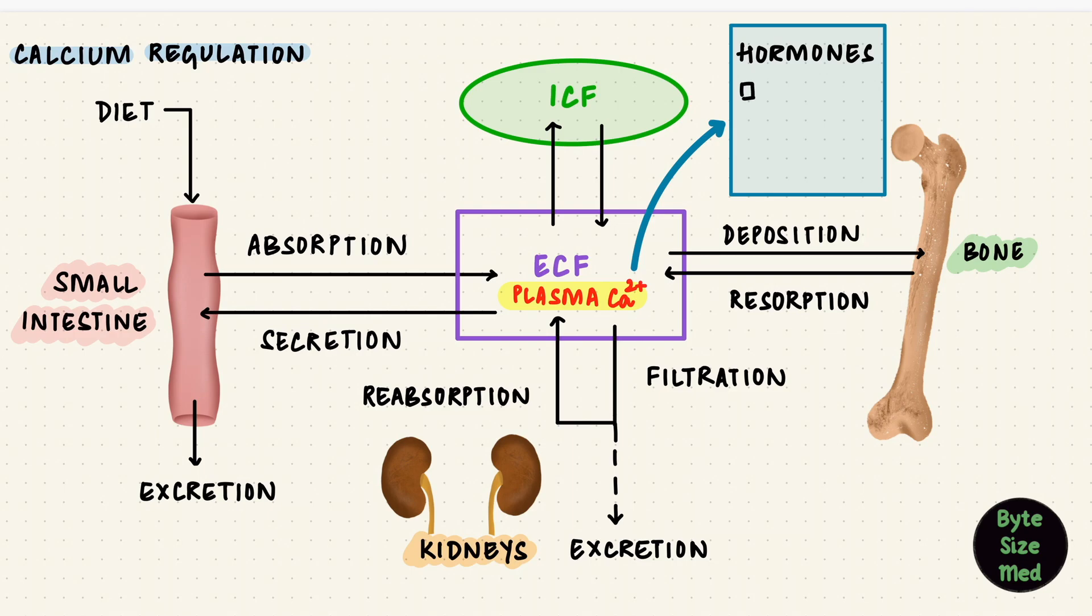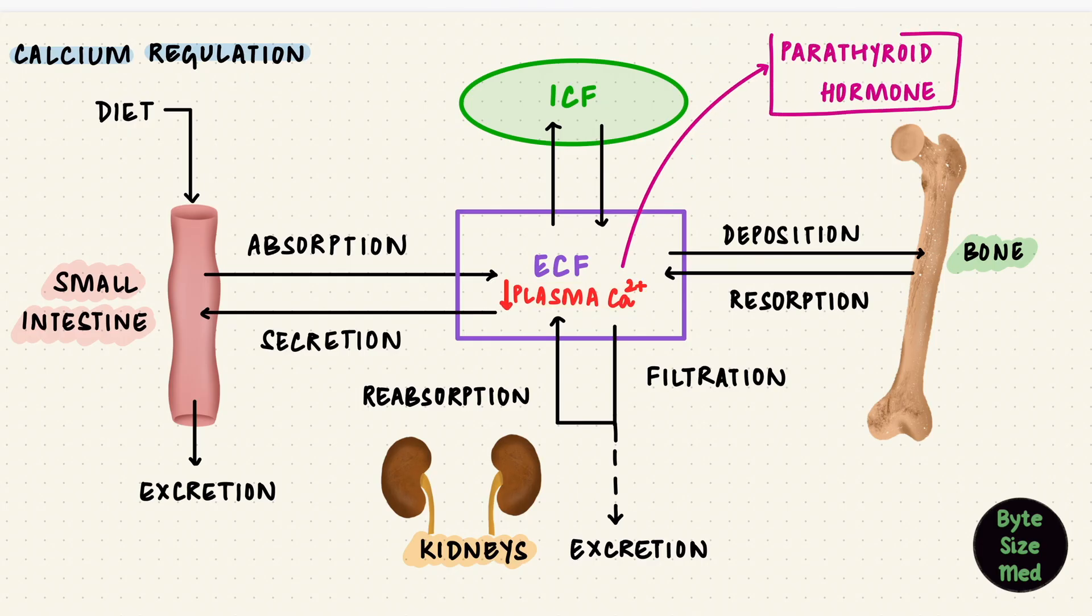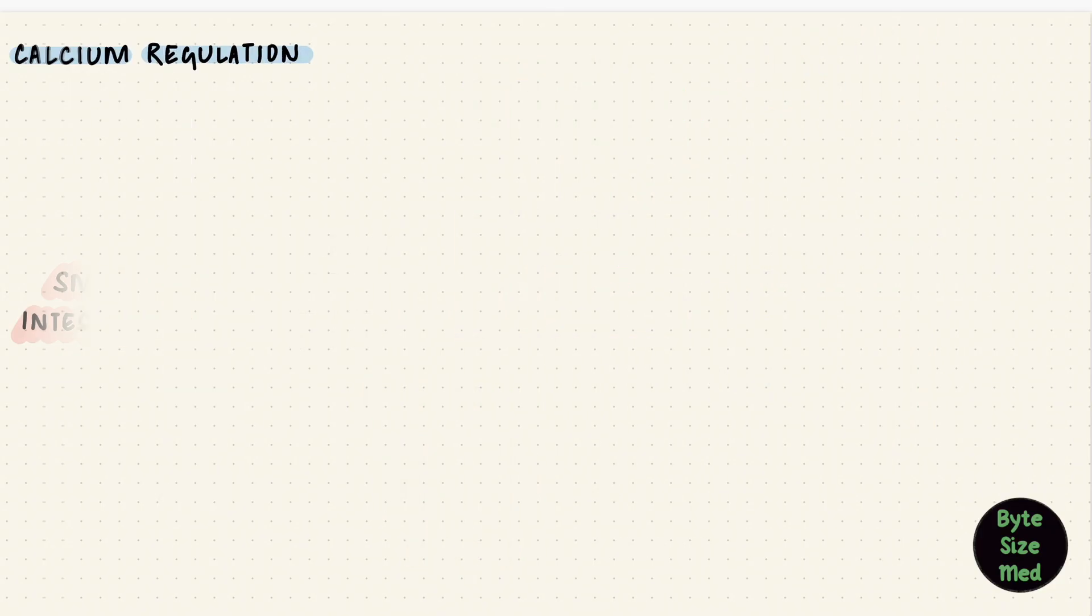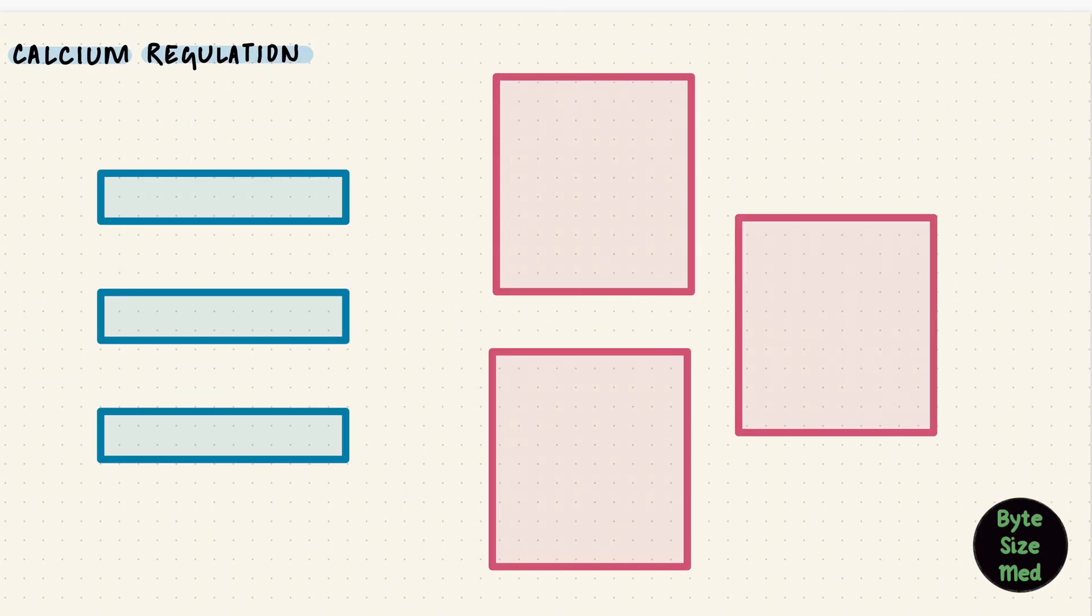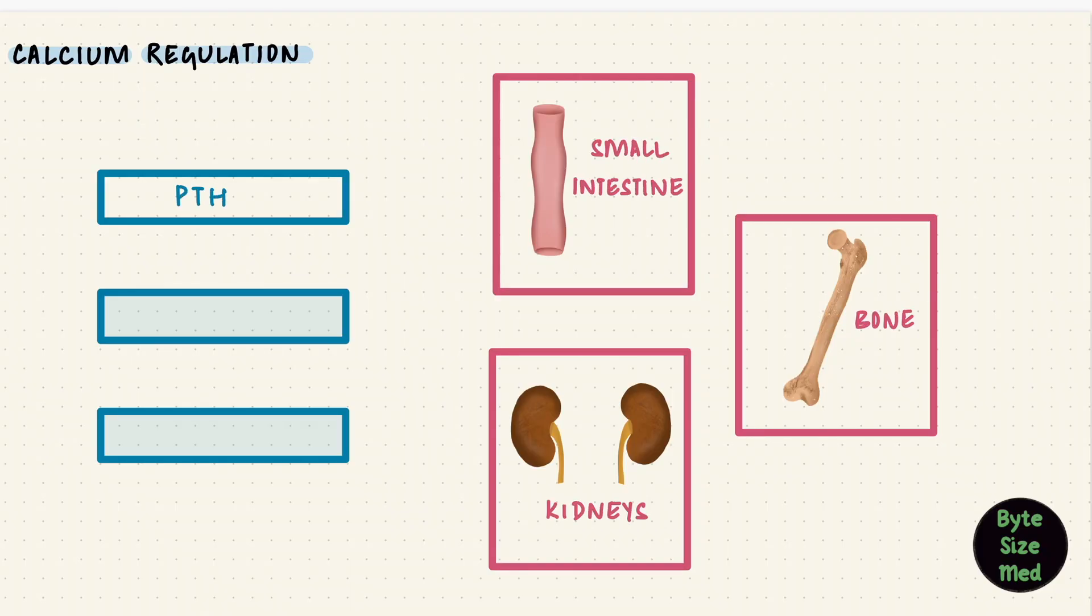Three important hormones: the parathyroid hormone, vitamin D, and calcitonin. For example, when calcium is low, more parathyroid hormone gets released, which can resorb bone and can increase reabsorption of calcium from the kidneys and set things straight. Three organs and three hormones: bone, kidney, small intestine, parathyroid hormone, vitamin D, and calcitonin.